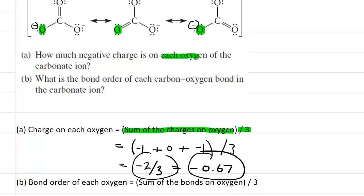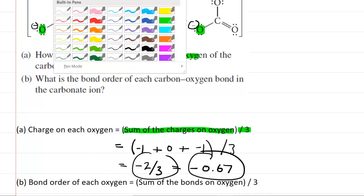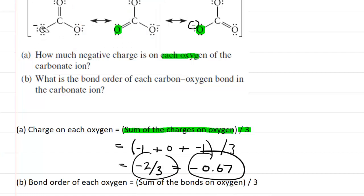We can move on to calculating the bond order of each oxygen. We're going to be looking at the same oxygen, the lower left oxygen. But in this case, what we're going to be summing is the bonds on that oxygen and then dividing that by three.